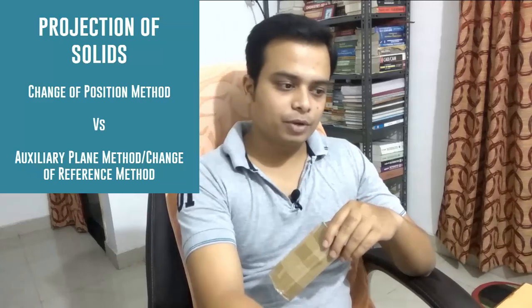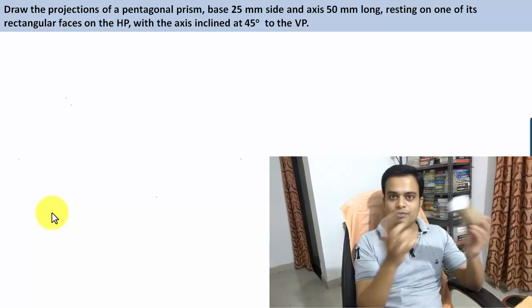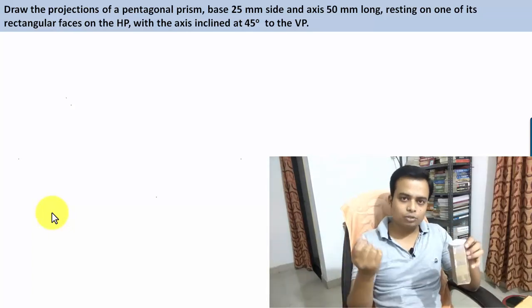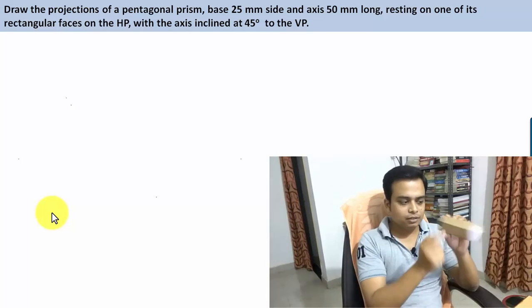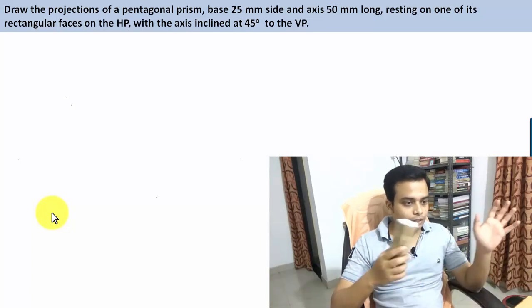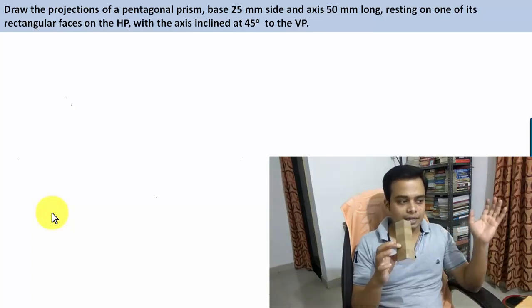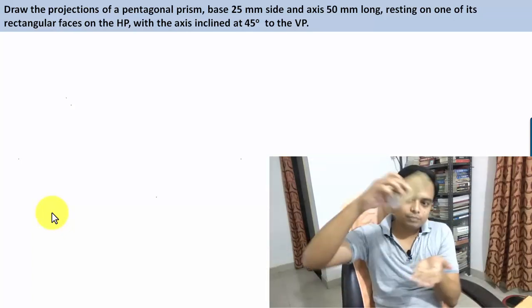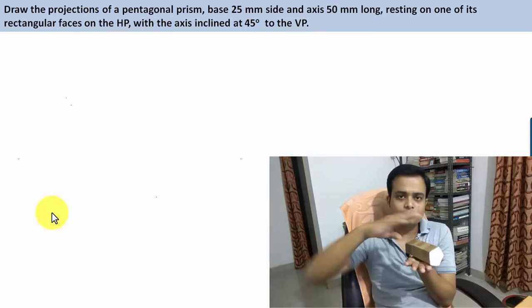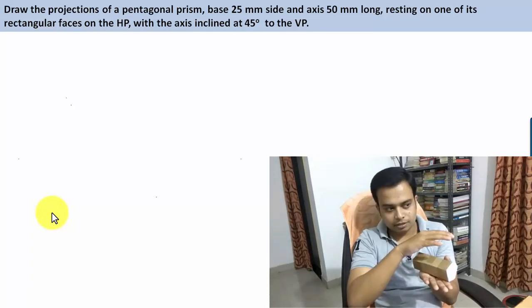So let's see what the problem has in store. We are talking about a pentagonal prism — base edges are 25 millimeters each, and the height of this prism has been given as 50 millimeters, or you can say the axis length center to center is 50 millimeters. This prism has five rectangular faces, and it is resting on one of its rectangular faces.